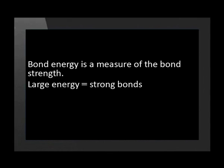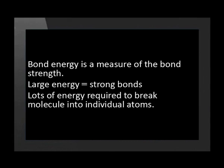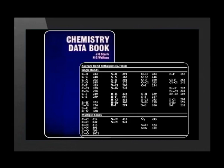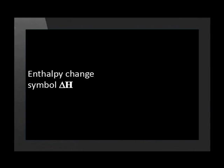Chemists determine bond energies experimentally and store the values in databases for use in calculations. The exact bond energy of a particular chemical bond depends upon the molecular environment in which the bond exists. You do not have to remember bond energy values — they will be given to you or can be found in chemical data books. There is a table of some bond energies in the series guide. We can use bond energies to calculate and predict if a reaction is exothermic or endothermic. The difference in bond energy between the reactants and the products is known as the heat of reaction. For a reaction at constant pressure, it is also the enthalpy change of the system, represented by the symbol delta H.